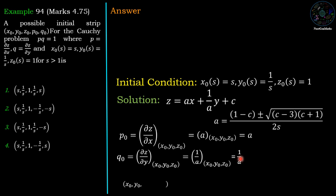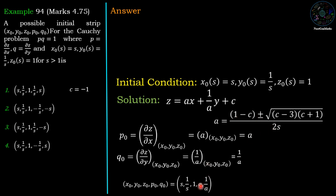The initial strip (x₀, y₀, z₀, p₀, q₀) is (s, 1/s, 1, a, 1/a). Since c is an arbitrary constant, we can choose any value. Taking c = −1: 1 − (−1) = 2, and c + 1 = 0, so the square root term vanishes. We get as = 2/(2s), so a = 1/s and 1/a = s. This gives option 1: (s, 1/s, 1, 1/s, s), which is correct.